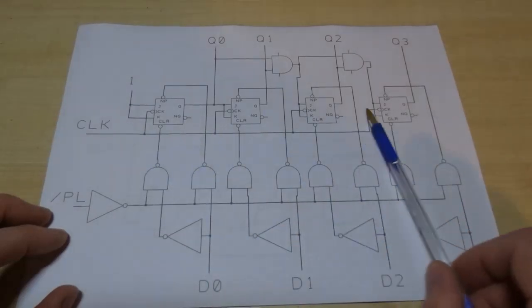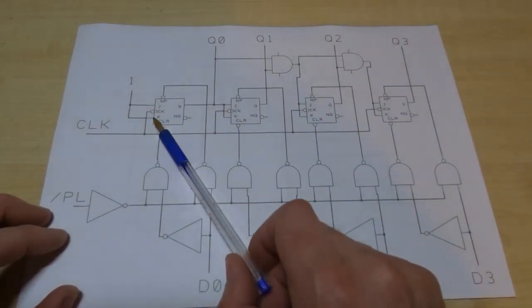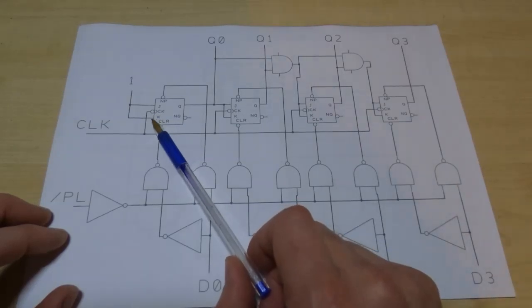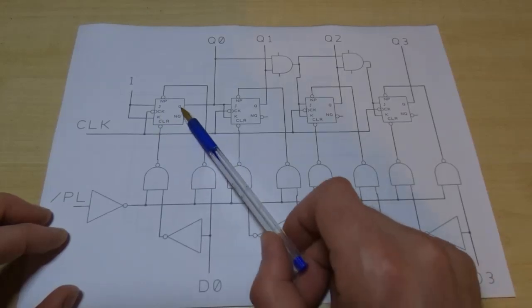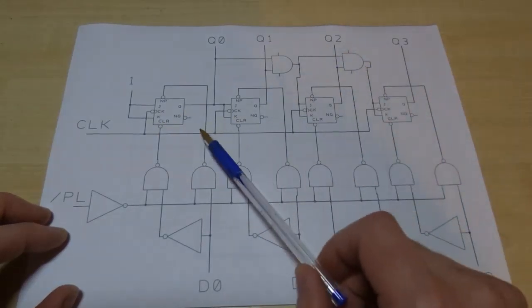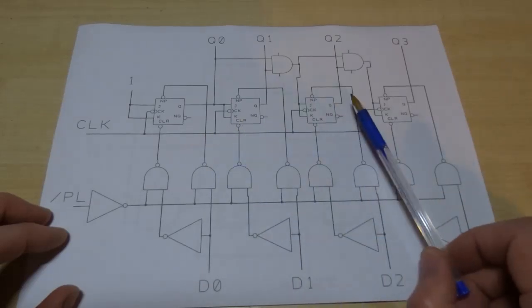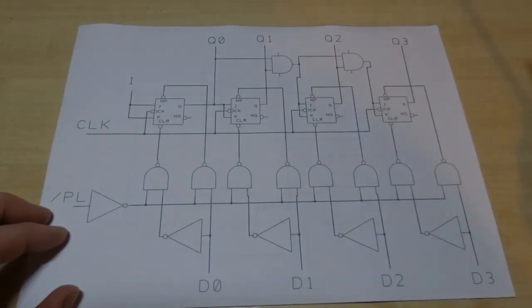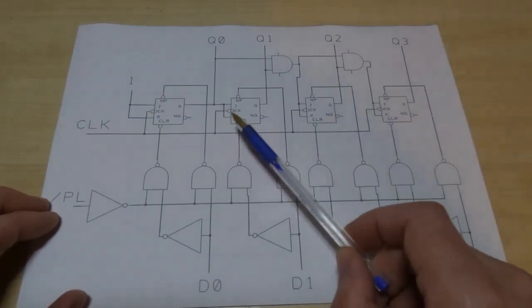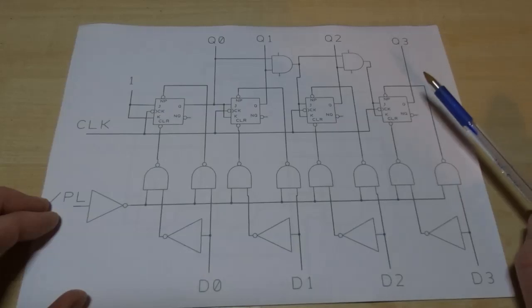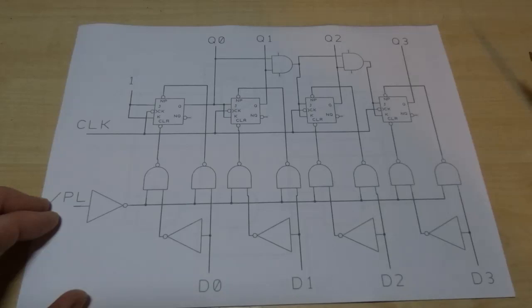But essentially it's just a simple counter using JK flip-flops and the form that the flip-flops are used in is just their toggling form where the J and the K are tied together which means that on each clock pulse they will just toggle the output. Now it's a synchronous counter, all the bits are clocked at the same time and we need that in order to be able to have the processor work reliably. We don't want the count rippling through, it has to be synchronous where all the bits are updated at the same time.